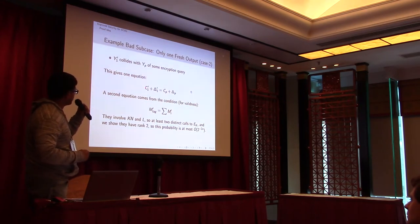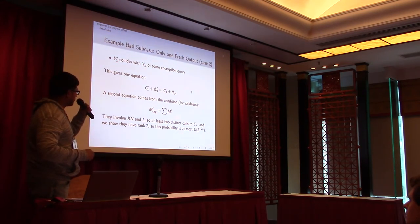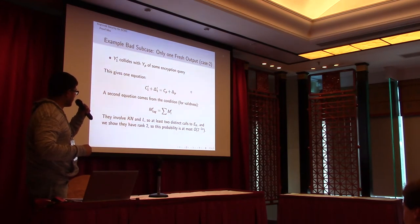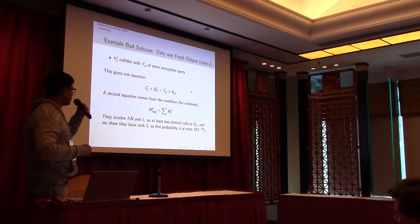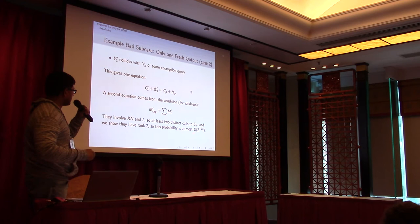So this is what case one looks like. In case one we have only one equation: C_1_prime plus delta_1_prime equals C_p plus delta_p, where y_1_prime is colliding with y_p. And we always have a second equation because the checksum must match. So this shows we have two equations and they involve KN and L, and these are the two block cipher calls we have. KN is the block cipher call generated during nonce processing, and L is the masking, which is the block cipher call with input zero. They are actually independent because if you remember in the nonce, the first bits cannot be zero. So they are independent block cipher calls, and so there are at least two distinct calls to the block cipher. We show they're rank two, and so this equality can be at most 1 over 2^2n.